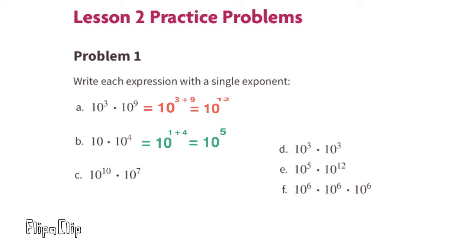Part C: 10 to the power of 10 times 10 to the power of 7. That's multiplying 10 by itself 10 times and then another 7 times. An exponent of 10 plus an exponent of 7 equals an exponent of 17. So 10 to the power of 10 times 10 to the power of 7 equals 10 to the power of 17.